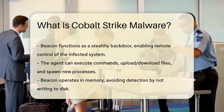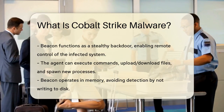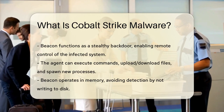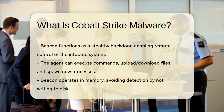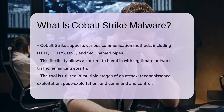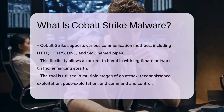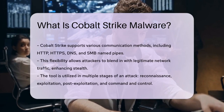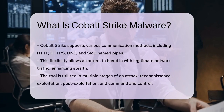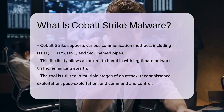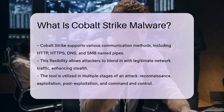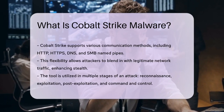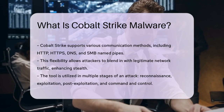Cobalt Strike can be used in multiple stages of an attack. It starts with reconnaissance, then moves to exploitation, post-exploitation, and finally command and control operations. It can also be combined with other hacking tools and methods, such as initial access brokers, to gain access to a network and then move laterally within it.